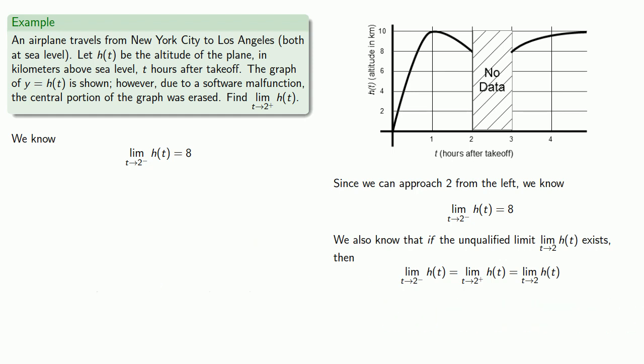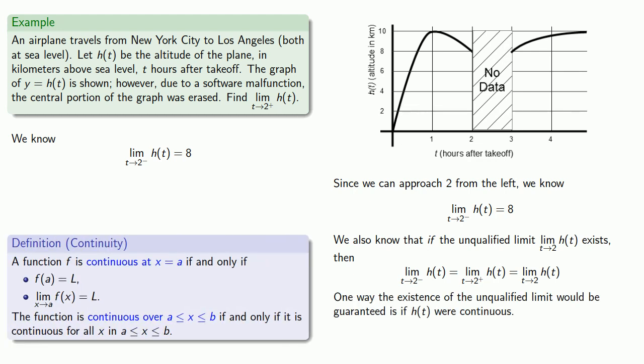And so we have to ask ourselves, does the unqualified limit exist? Well, one way the existence of the unqualified limit would be guaranteed is if H of T were continuous. And that's because one of the requirements for a function to be continuous is that the limits must exist.